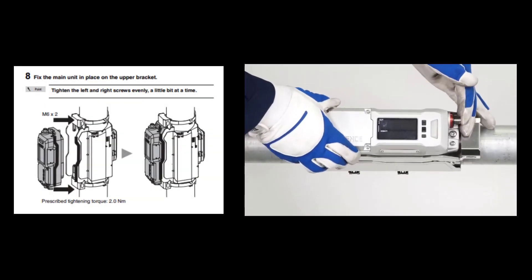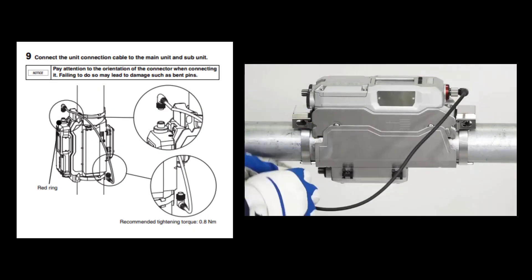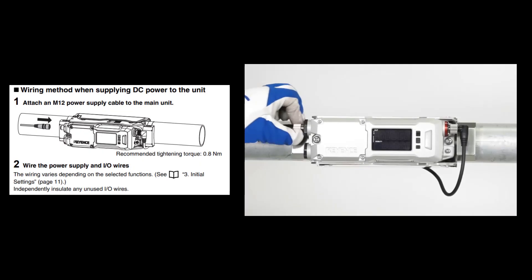Attach your main unit with the two screws included with the unit and attach your main unit to subunit series connection cable. Finally, screw on the last cable and apply power to the unit.